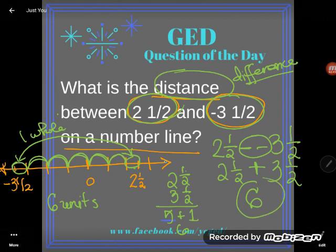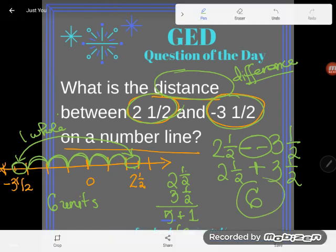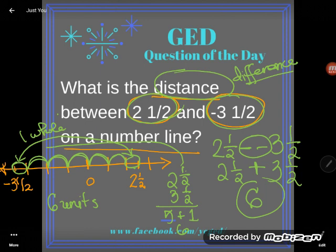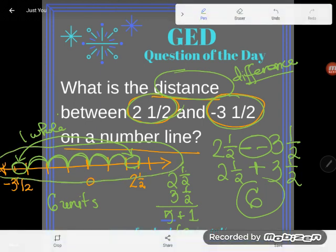You know, with numbers, you can do it pictorially here with your diagram, but you do need to see that -3½ and 2½ are six units apart on the number line.